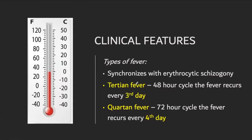The type of fever is synchronized with erythrocytic schizogony, which is the asexual cycle. Tertian fever has a 48-hour cycle with fever recurring every third day. Quartan fever has a 72-hour cycle with fever recurring every fourth day — 'quartan' relates to 'quattro,' meaning four.